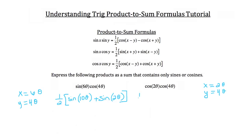We've got one half times the cosine of x minus y — so two theta minus four theta, which is negative two theta — plus the cosine of x plus y, so two theta plus four theta, which is the cosine of six theta. You could leave the problem here as the sum from this product to sum formula.